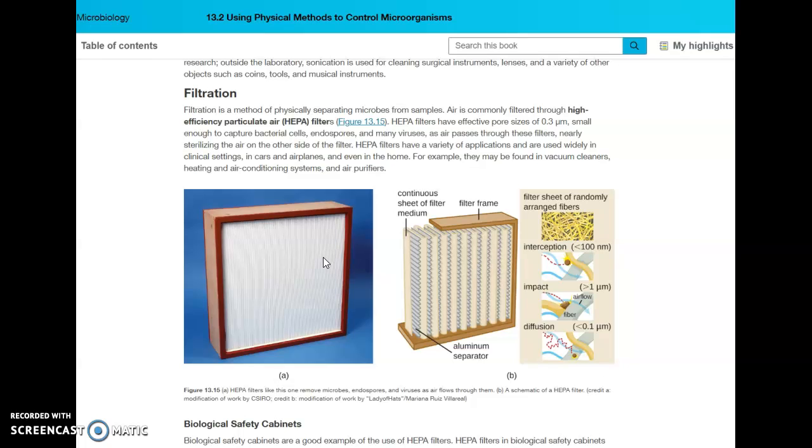Filtration is when we separate microbes from samples. One method of this is by using HEPA filters, which HEPA stands for High Efficiency Particulate Air. They have a very tiny pore size, small enough that it can catch bacterial cells, some viruses, endospores, and definitely mold spores. It doesn't quite sterilize the air, but it comes really close. HEPA filters are used in cars and airplanes, and now you can buy them for your home. Most vacuum cleaners now have HEPA filters in them. You can buy them for your central heat and air filters that you replace. HEPA filters are a little bit more expensive than normal filters, but your air is going to be cleaner.